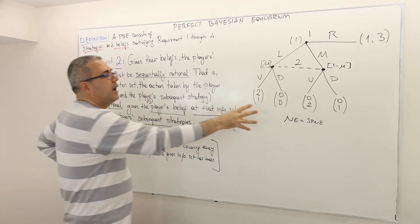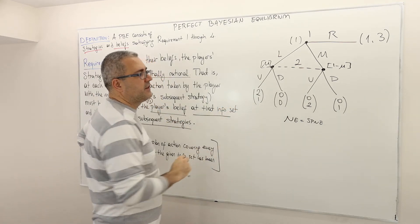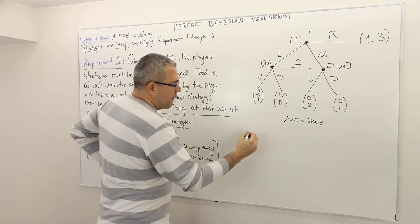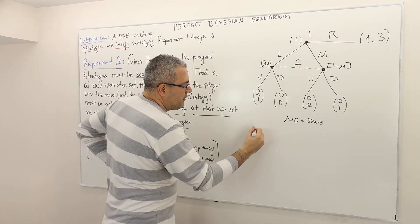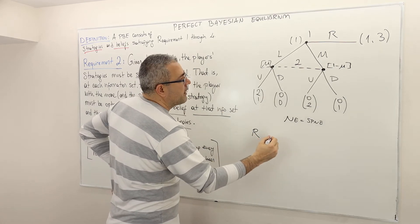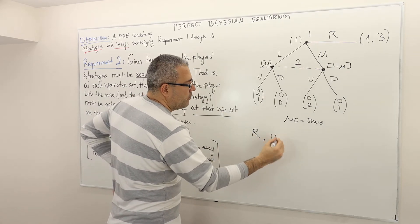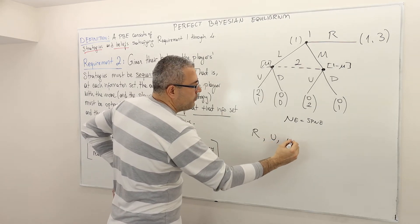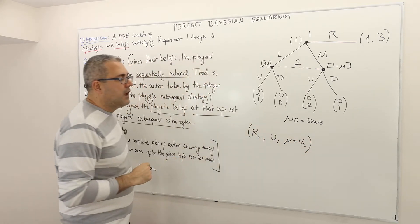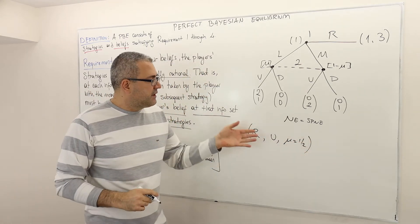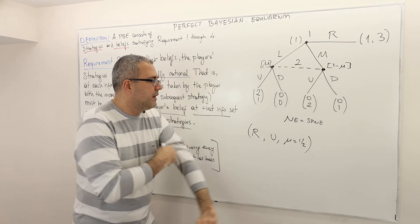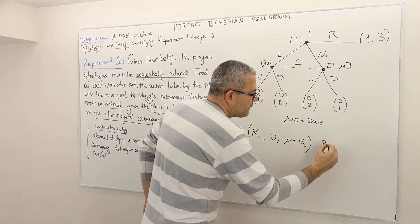Let me try to clarify this with some examples in this specific game. Let's pick some strategy profile: player one plays right, player two plays U, and the belief system is mu equals one half. Does this strategy profile and belief system satisfy requirement two?